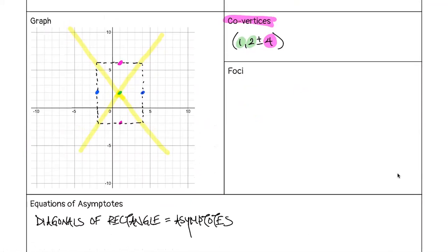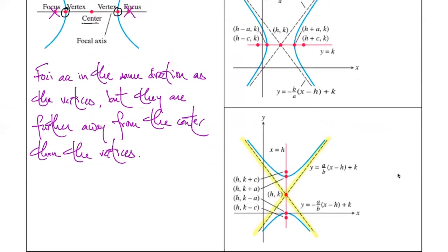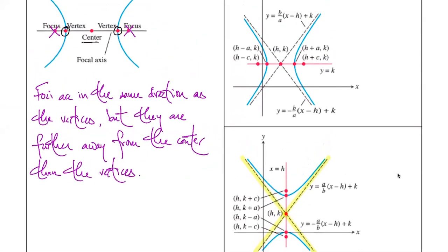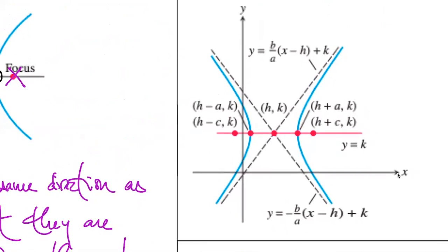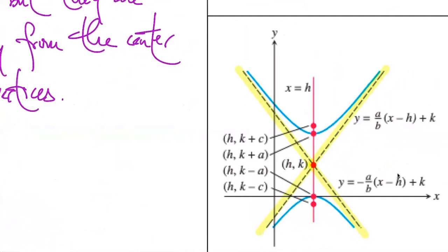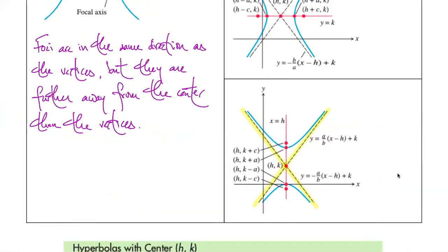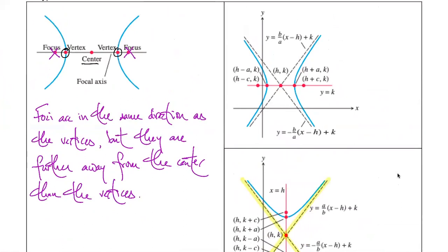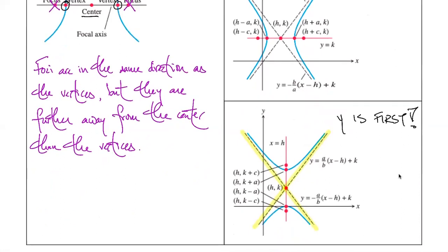To finish the picture, we need to decide: do the hyperbolas go side to side or up and down? If x is first in the equation, it opens in the x direction — side to side. If y is first, it opens in the y direction — up and down.